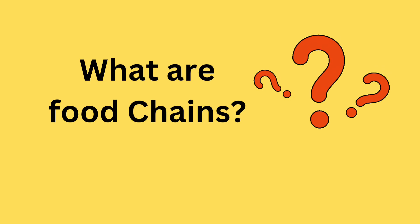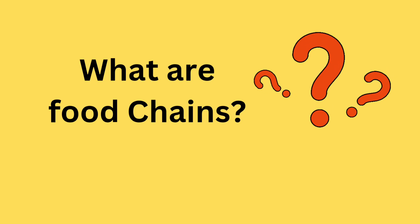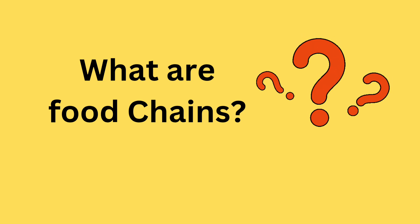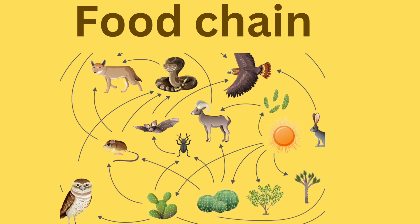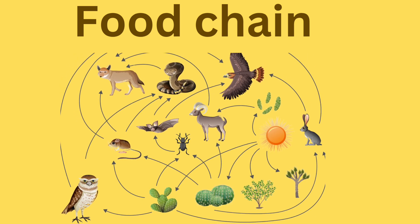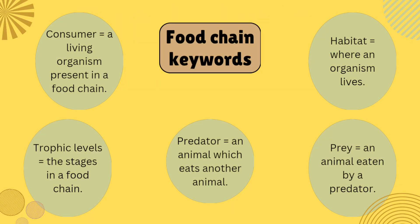What are food chains? Food chains are a representation of the flow of energy and feeding relationship from one organism to another in an ecosystem. Let's see the keywords of food chain. There are five keywords: consumer, trophic level, predator, prey, and habitat.